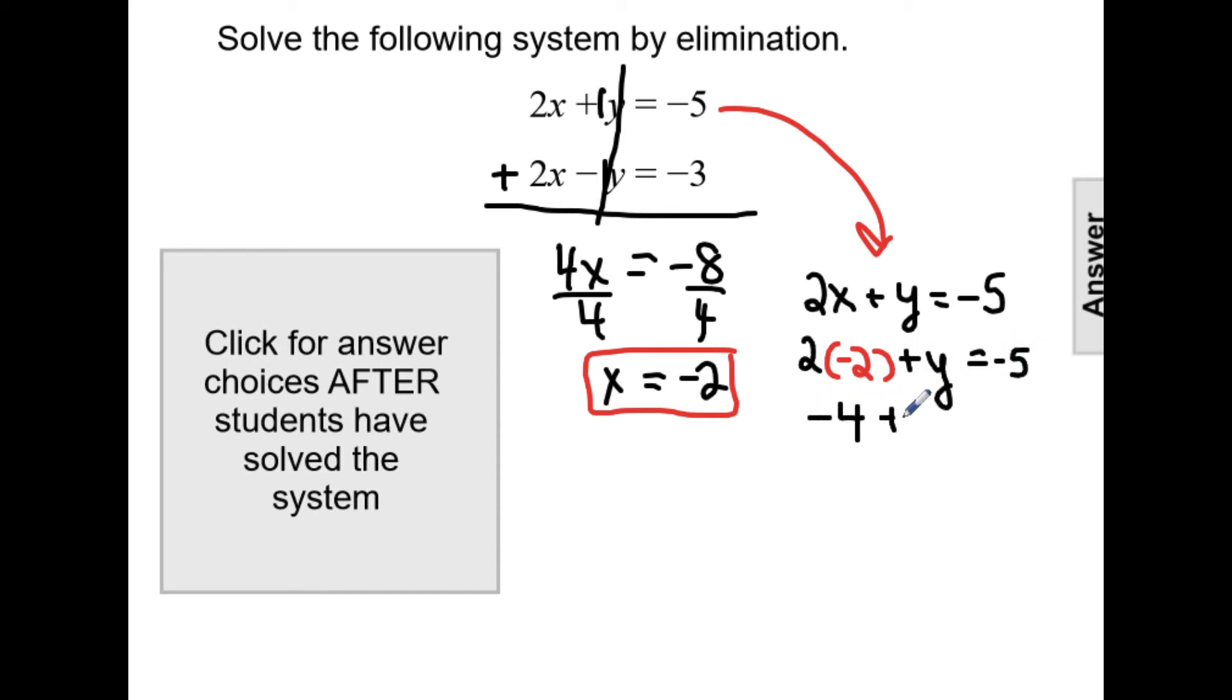So negative 4 plus y equals negative 5. And if I add 4 to both sides, then y equals negative 1.